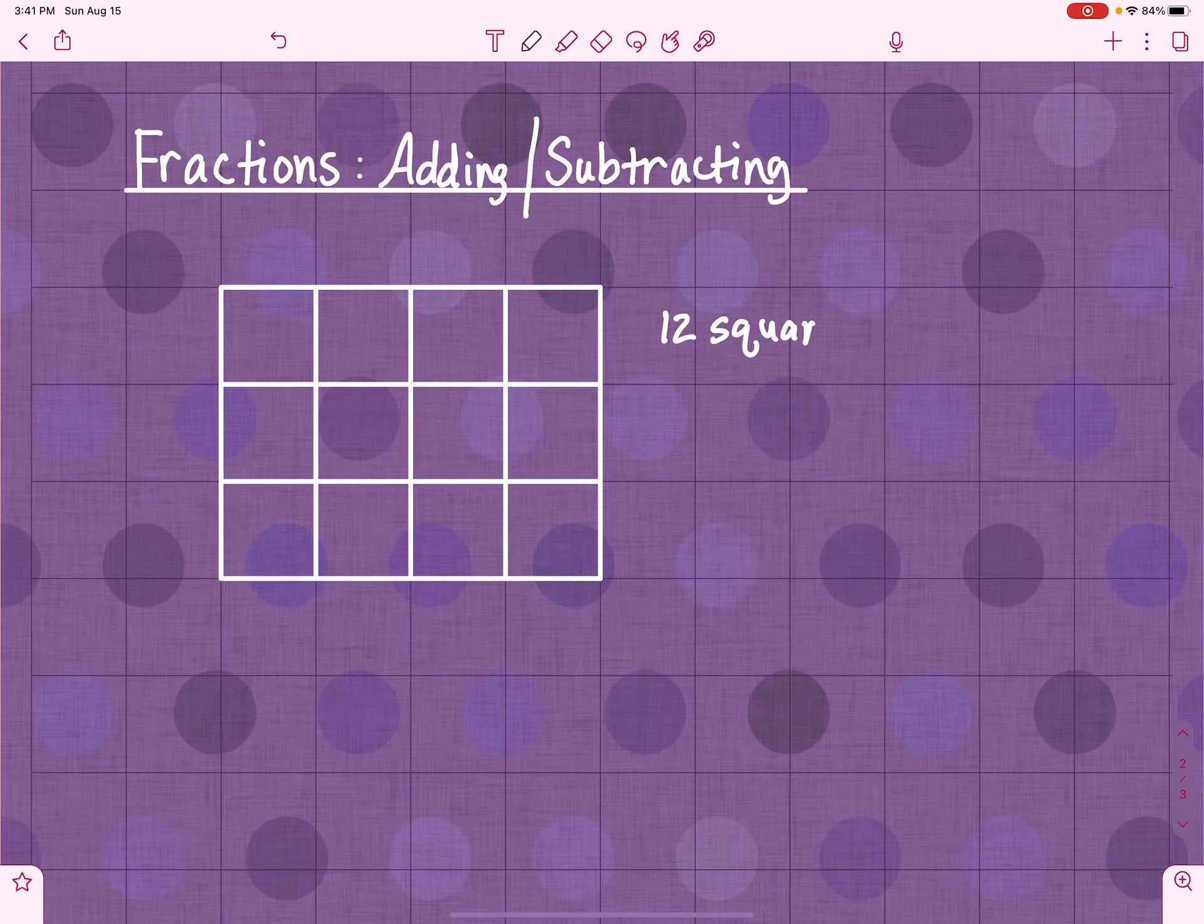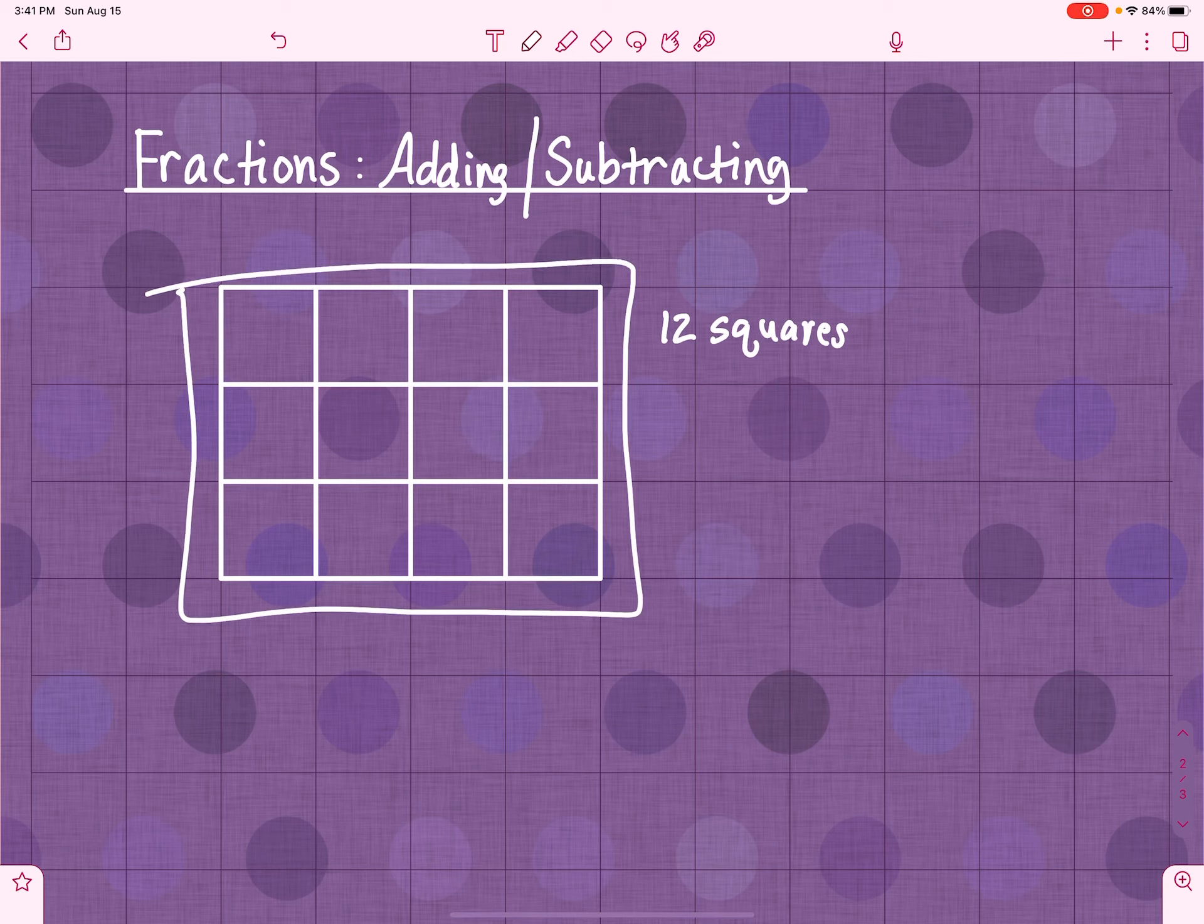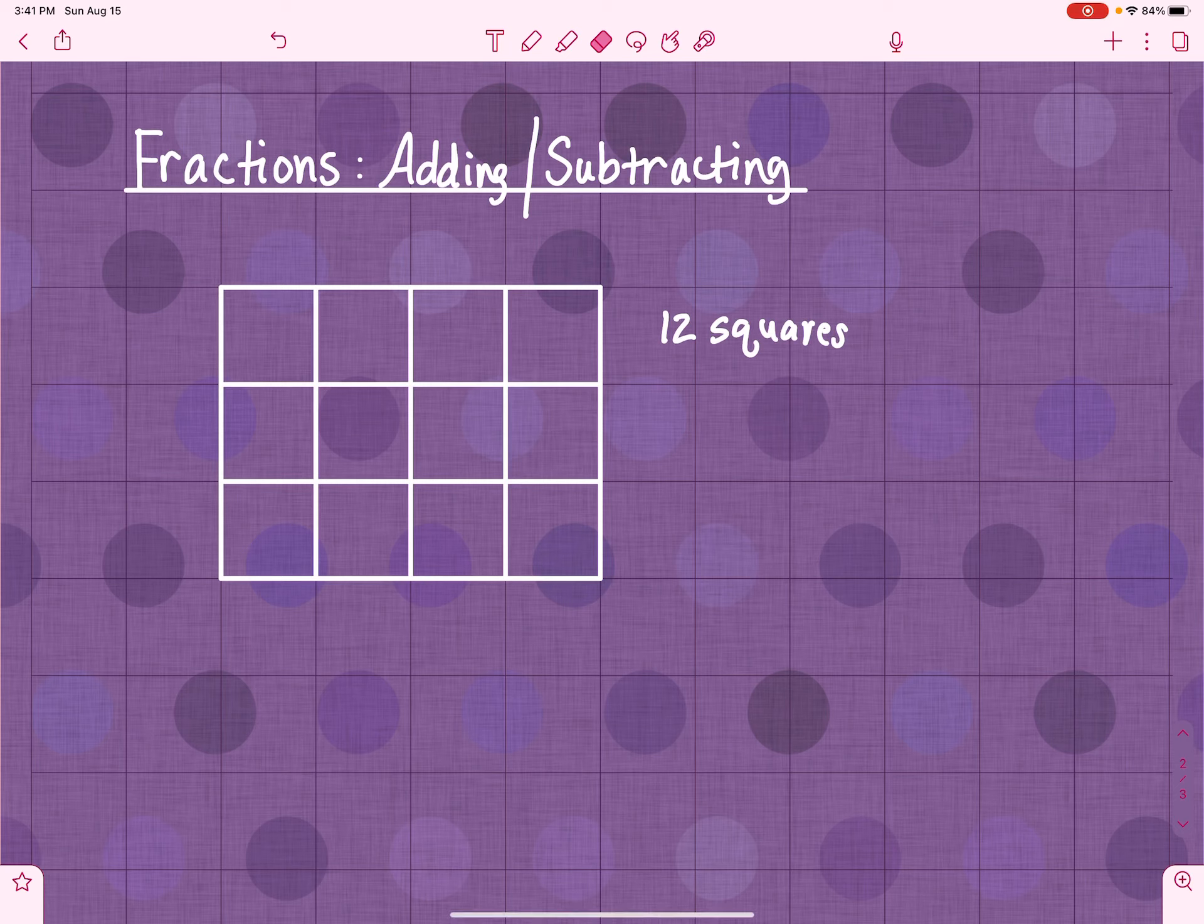These 12 squares make up my whole rectangle. There's one rectangle made up of 12 equal squares. So having said that, let's look at this.